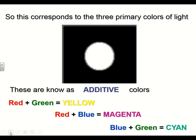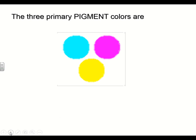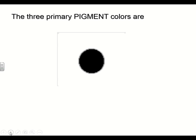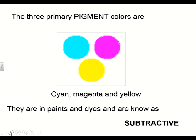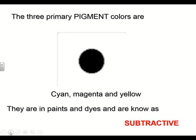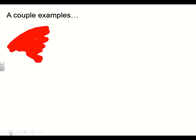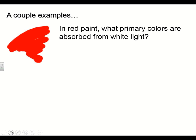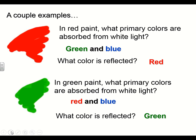Magenta, yellow, and cyan are known as secondary or subtractive colors. The three primary pigment colors are cyan, magenta, and yellow — what paints and dyes use. They are subtractive because putting them all together cancels all the color out and you get black, whereas red, blue, and green light together give you white. In red paint, green and blue are absorbed while red is reflected — that's what we see. In green paint, blue and red are absorbed, and green is reflected.